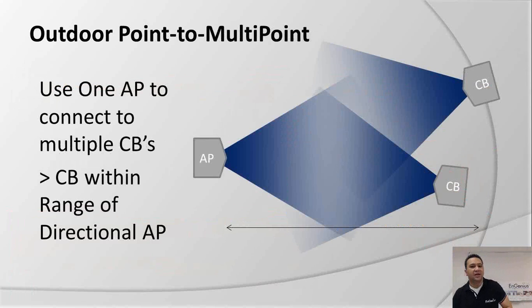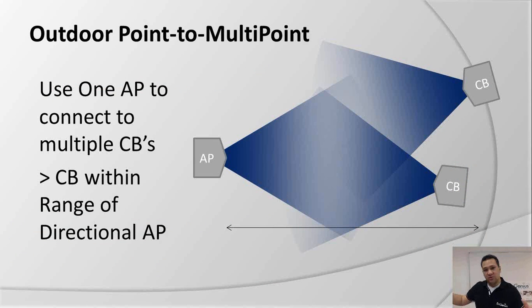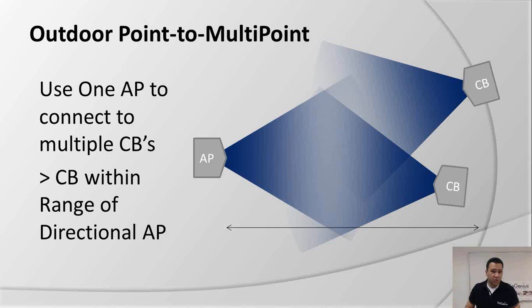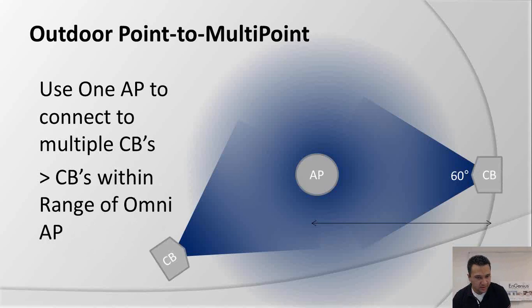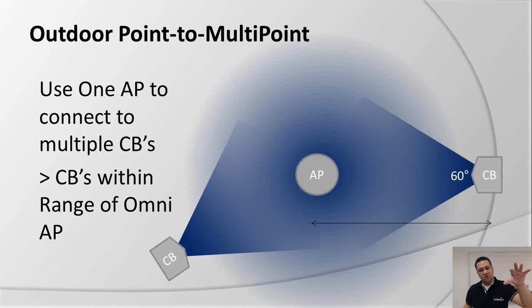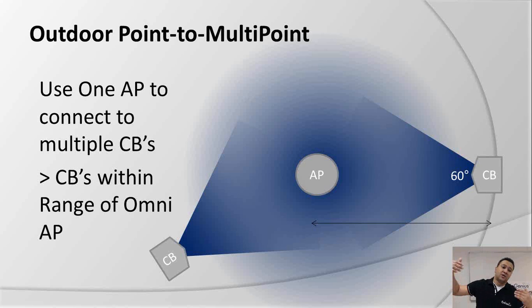In point-to-multipoint mode, within the angle of the access point you can connect not just one but multiple client bridges. You set up a directional access point and connect multiple client bridges as long as they are within the antenna's coverage angle. Alternatively, you can use an omnidirectional access point in the center and connect client bridges located around it.